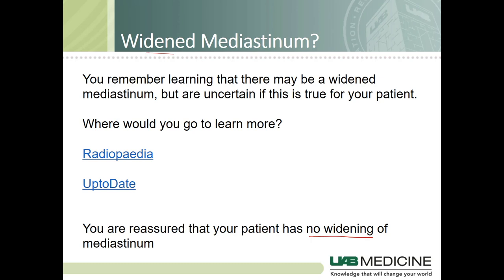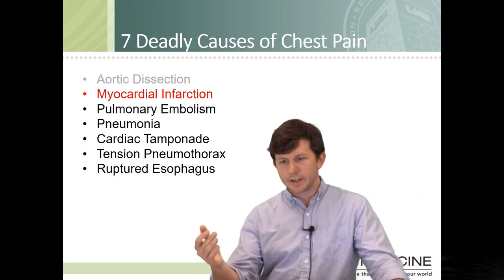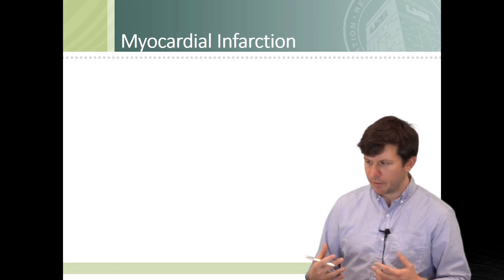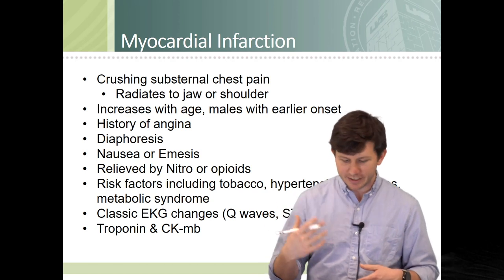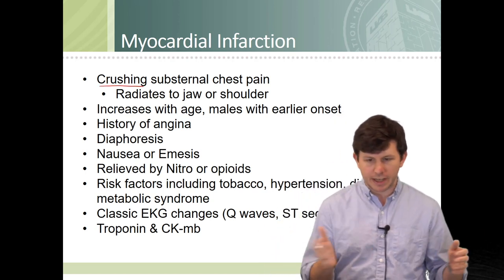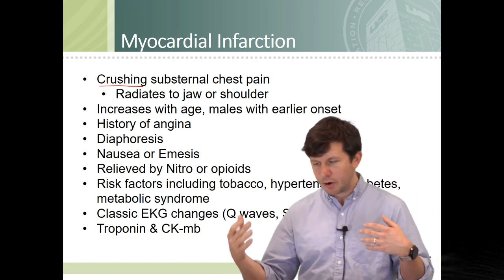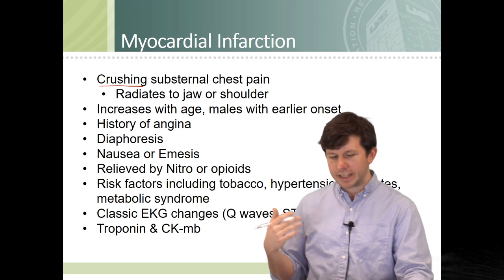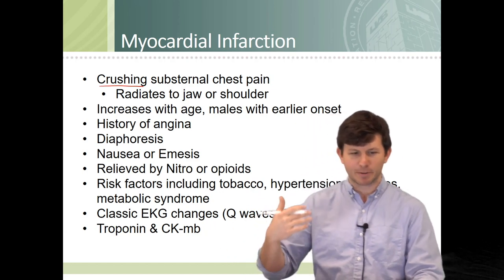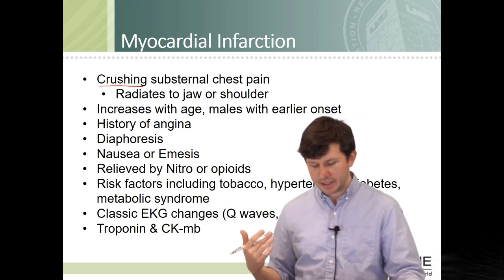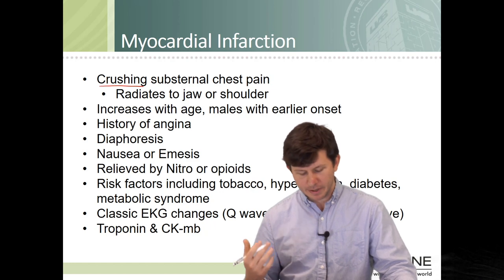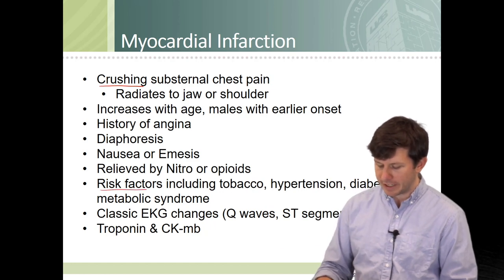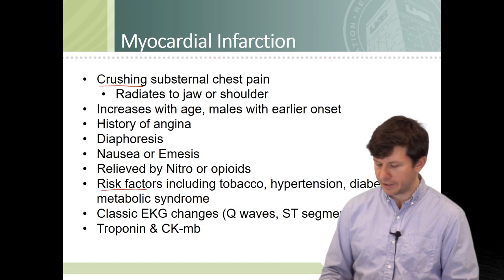Next: myocardial infarction. What is your illness script for MI or coronary artery disease? You probably think of the classic crushing chest pain — the elephant on the chest — radiating to the jaw or shoulder. Males tend to have earlier onset, and our patient fits that range. You want to know about their history: have they had this before, or had stable chest pain that's now worse? We always ask about relief — what relieves the pain? Classic teaching includes relief by nitrates or opiates. And of course, risk factors — our patient has many of them.